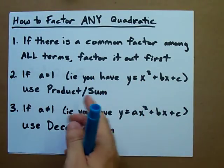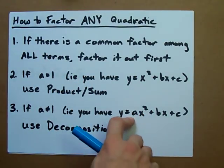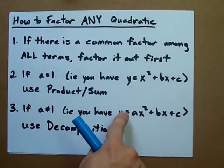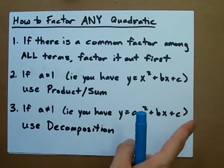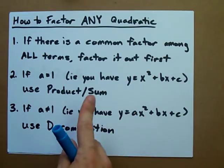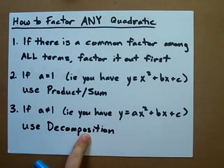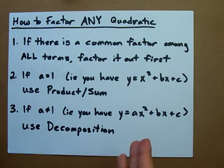I'll show you how to do that if you don't already know what it is, but you may be left with something in front of the x squared, like 2x squared or negative 5x squared plus something x plus something. If that's the case, you're gonna have to use a little bit more complicated of a method. I'm gonna show you how to use decomposition.